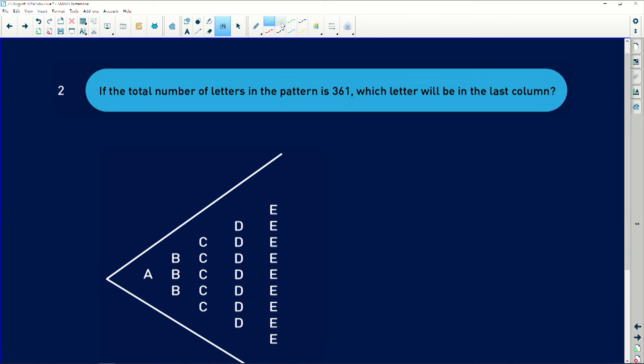Right, the last part of this question is very interesting. They're saying to you, if the total number of letters in the pattern is 361, which letter will be the last in the column? Once they say total, they're talking about the sum.